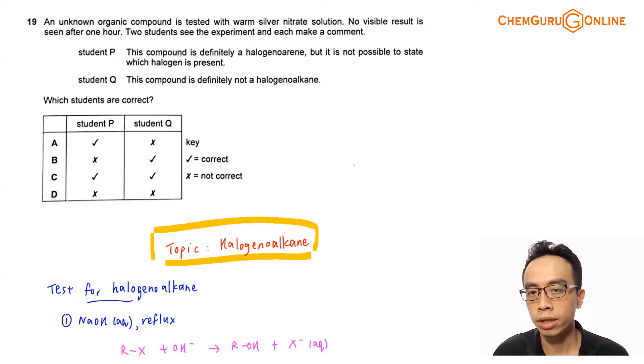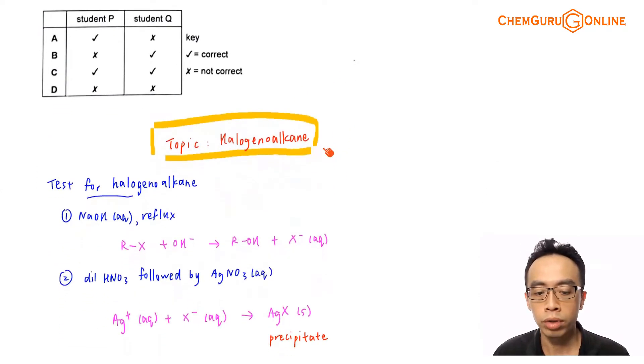Now you notice when we consider this test, warm silver nitrate solution, we know that this is related to tests for halogenoalkane. So the topic tested in this question is under halogenoalkane, and let us recap the test for halogenoalkane.